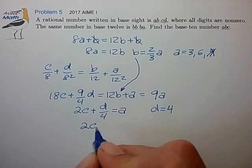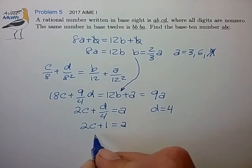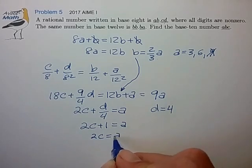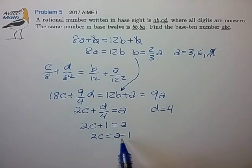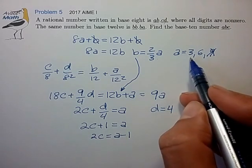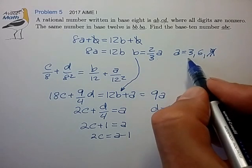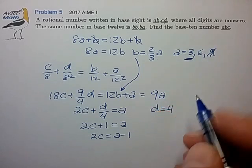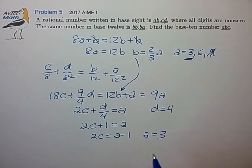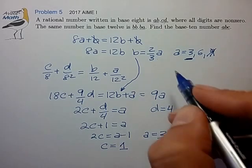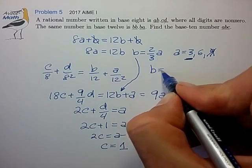So now we know that 2C plus 1 is equal to A. So 2C is equal to A minus 1. So A minus 1 has to be a factor of 2. And the only way that can happen is if A is equal to 3. So here we know that A is equal to 3. Substituting this in, we find that C is equal to 1. A equal to 3 plugged into here implies that B is equal to 2.